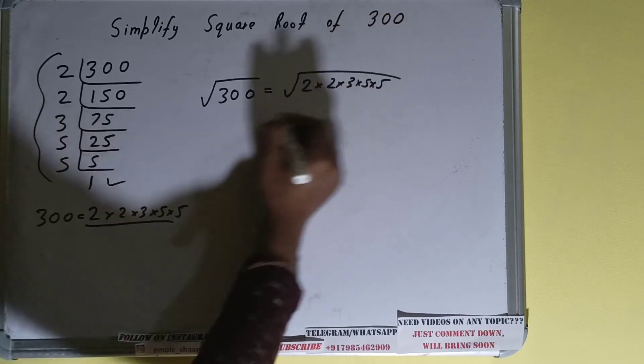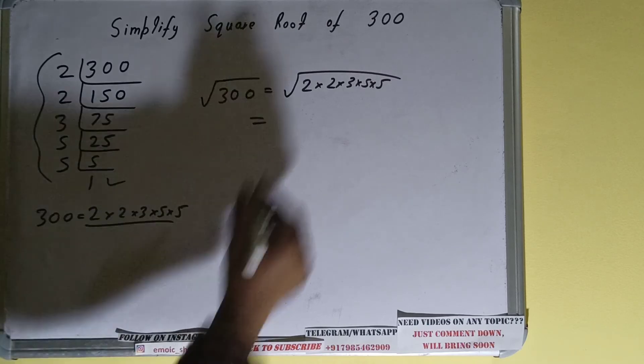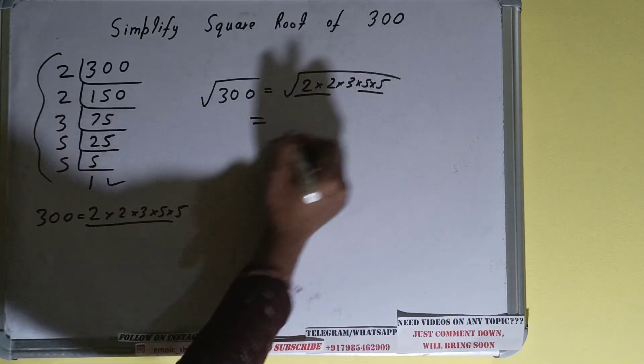The next thing we need to do is we can form pairs. Pairs is basically a set of two numbers and it should contain the same number. So we have a pair of 2 and a pair of 5.